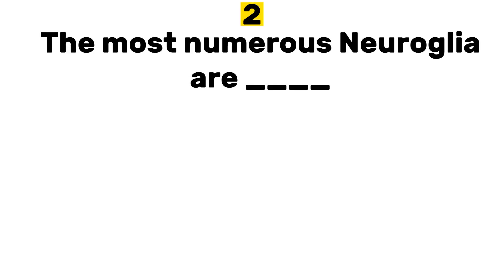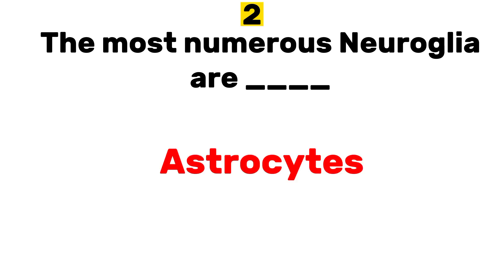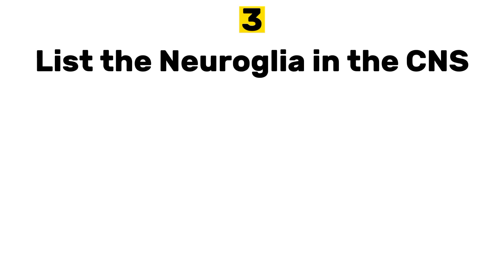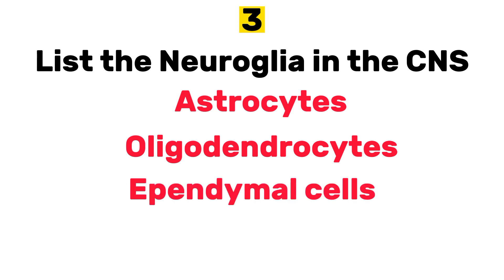Number 2. The most numerous Neuroglia are: Astrocytes. Astrocytes are the most numerous Neuroglia. Number 3. List the Neuroglia in the central nervous system. Astrocytes, Oligodendrocytes, Ependymal Cells and Microglia.